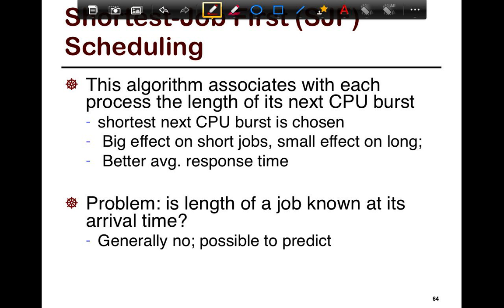The problem is the length of the job is not known at its arrival time, in general. But it's possible to predict. Also, if you have short jobs arriving, and there are a lot of short jobs arriving before the long job, then obviously the long job is going to get penalized. For example, if you had 100 one-second jobs and one 25-second job, then short ones are all going to run, penalizing the long one.